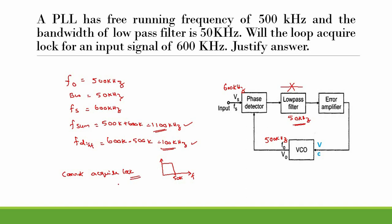If the bandwidth of the low-pass filter were increased to 100 kilohertz or more, the loop could acquire lock. The minimum value required for the low-pass filter bandwidth must be equal to the difference frequency component. If the bandwidth meets or exceeds this, the PLL can acquire lock; otherwise it cannot. For this given question, since the bandwidth of the low-pass filter is less than the difference frequency component, the PLL cannot acquire lock.